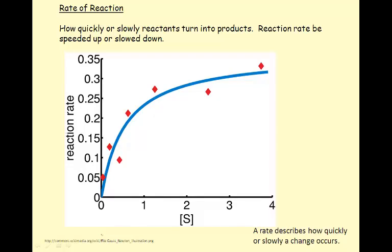A rate describes how quickly or slowly a change occurs. Every chemical reaction proceeds at a different rate. However, you can speed up or slow down the rate of chemical reaction. In this graphic, we see a line that represents the rate of reaction that has actually changed throughout the chemical reaction.